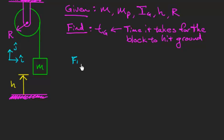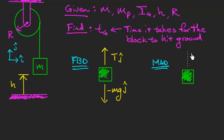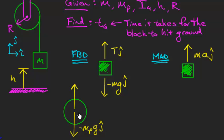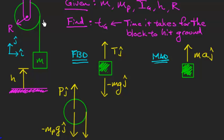I'll start with free body diagrams. For the block, there's a force upward due to the tension in the string, and a force pulling down equal to the weight of the block. I also need a mass-acceleration diagram. Even though I know this thing's going to accelerate down, when acceleration is unknown, I always draw it in the positive direction. For the pulley, there's a force down because of the weight of the pulley, mpg in the minus j-hat direction. There's also a force upward acting through the pin, and then the tension pulling down on the pulley at the point where the rope contacts it.